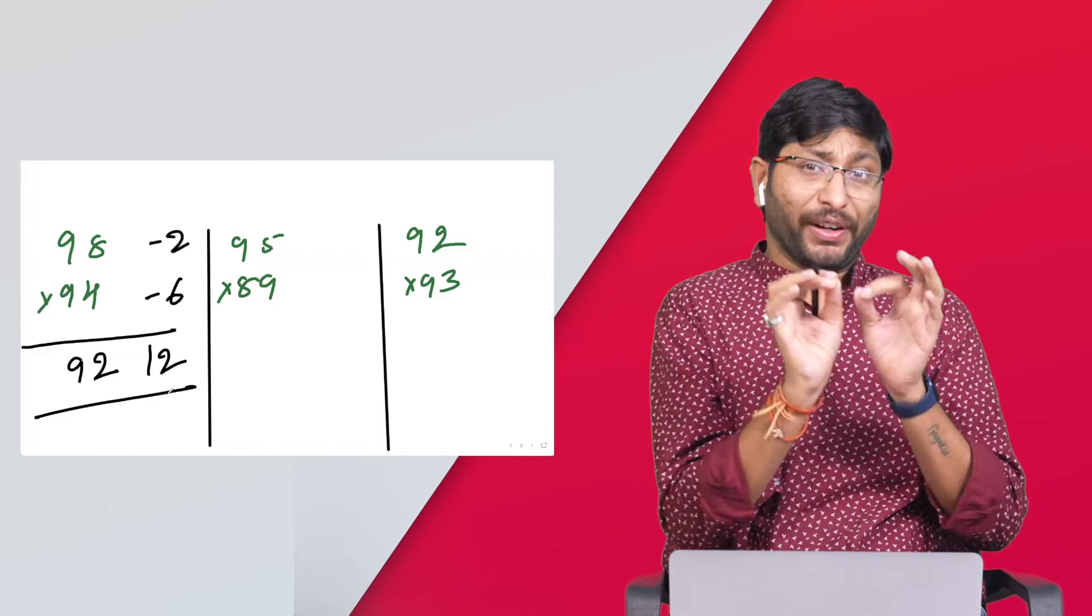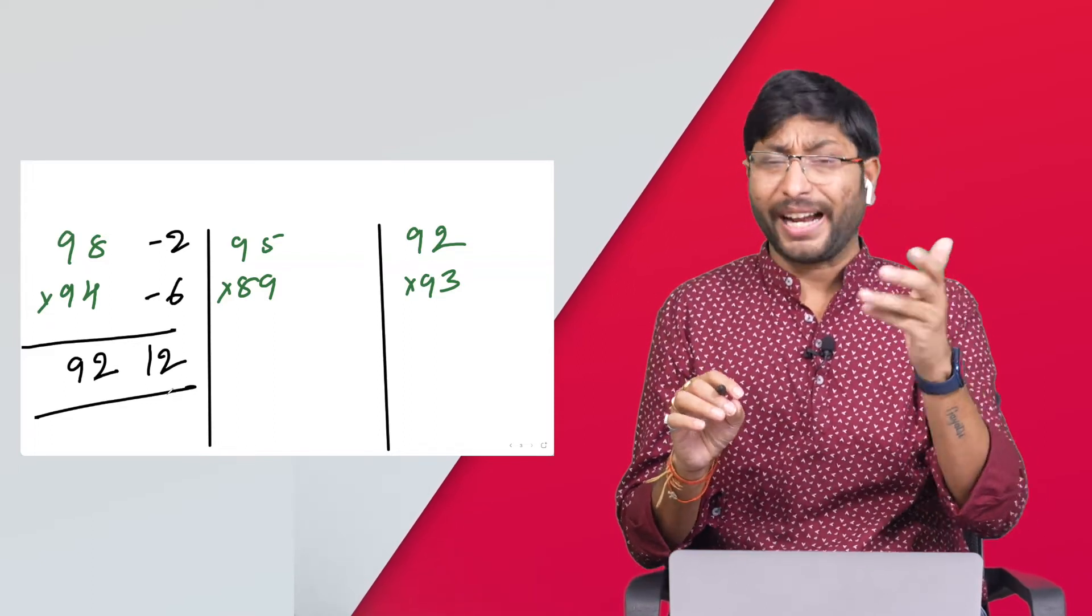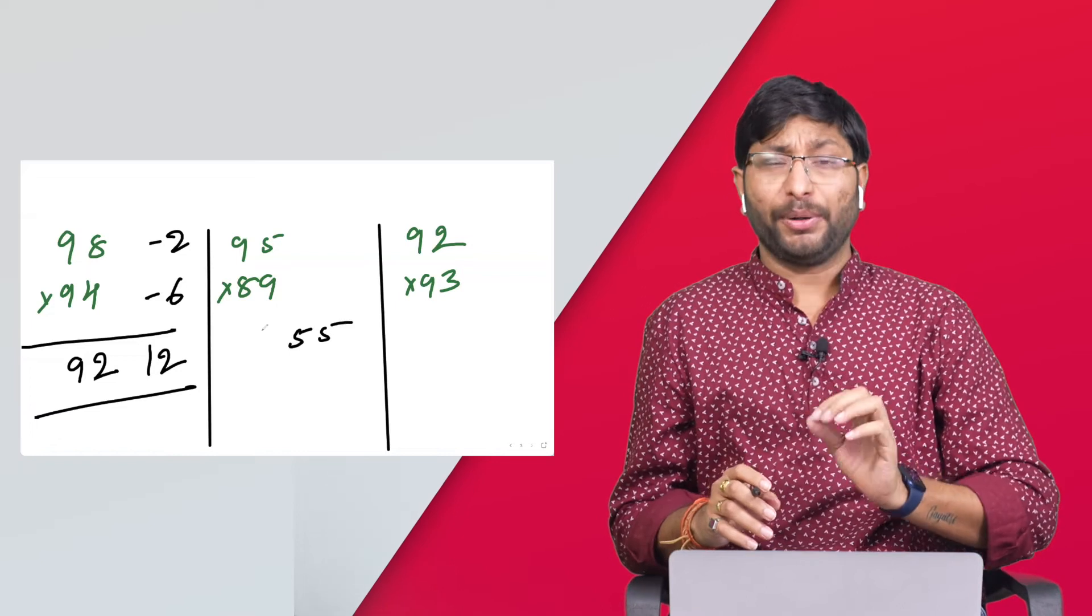Visualization: 95 minus 5. In the mind you should not write anything on the paper. 95 minus 5, 89 minus 11. 11 into 5 is 55. 89 minus 5 is 84. In one step, if you practice 20 to 40 problems depending on your grasping skills, depending on your practice, you are able to do it in one step.